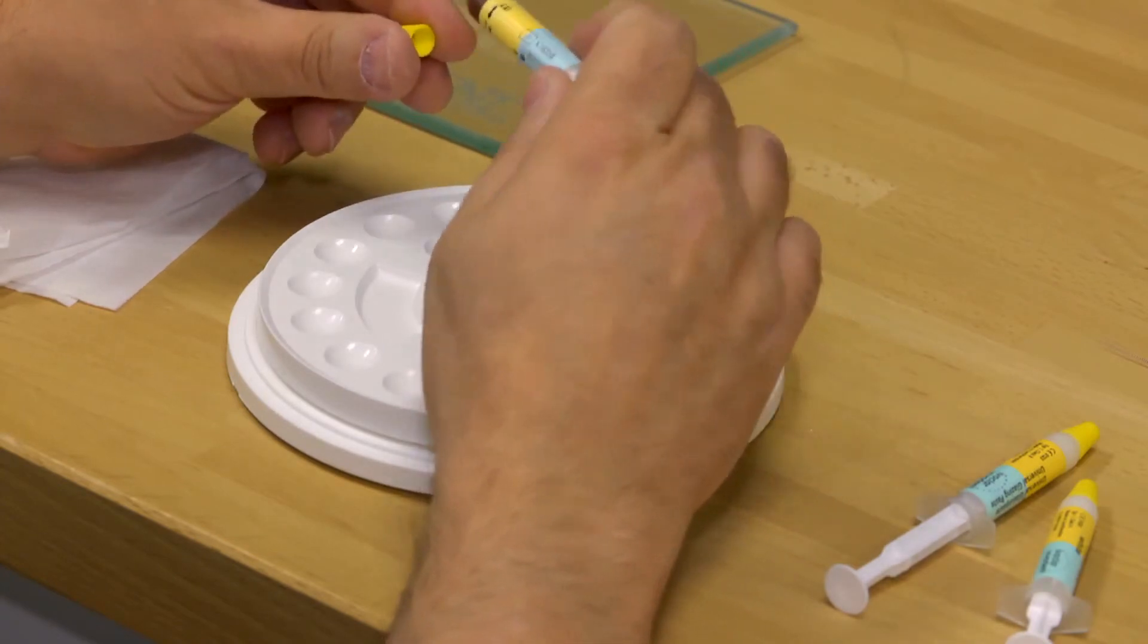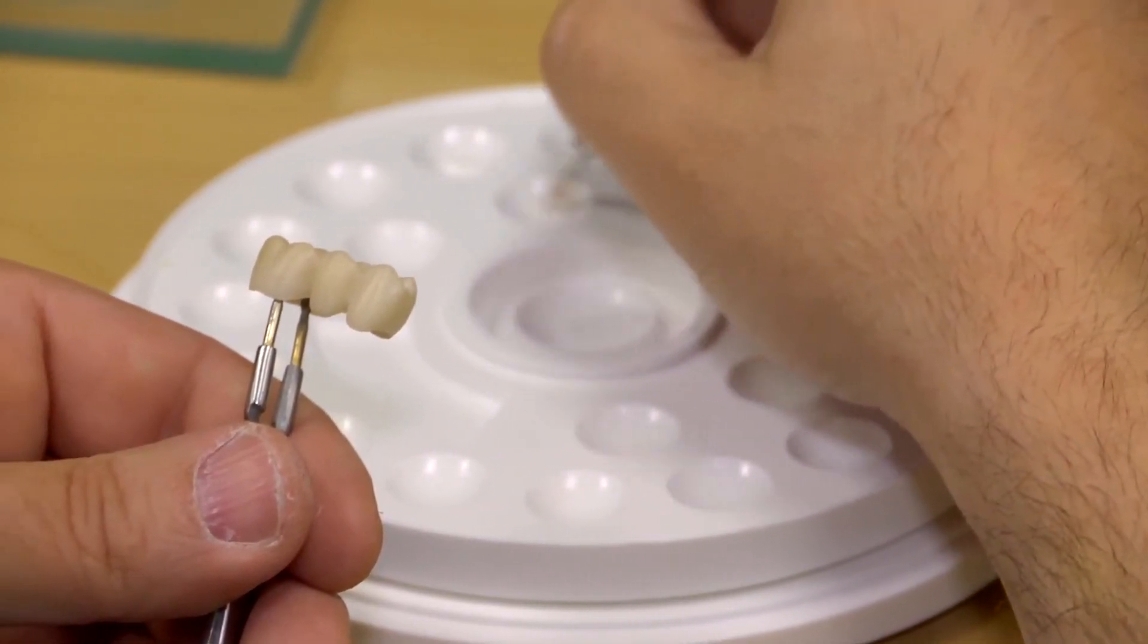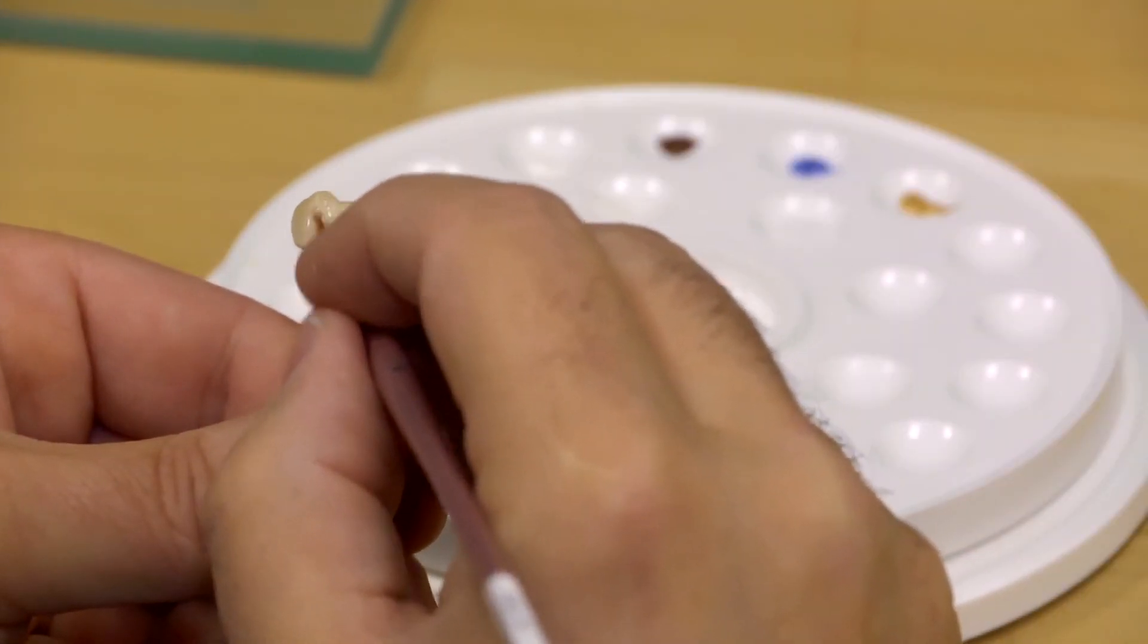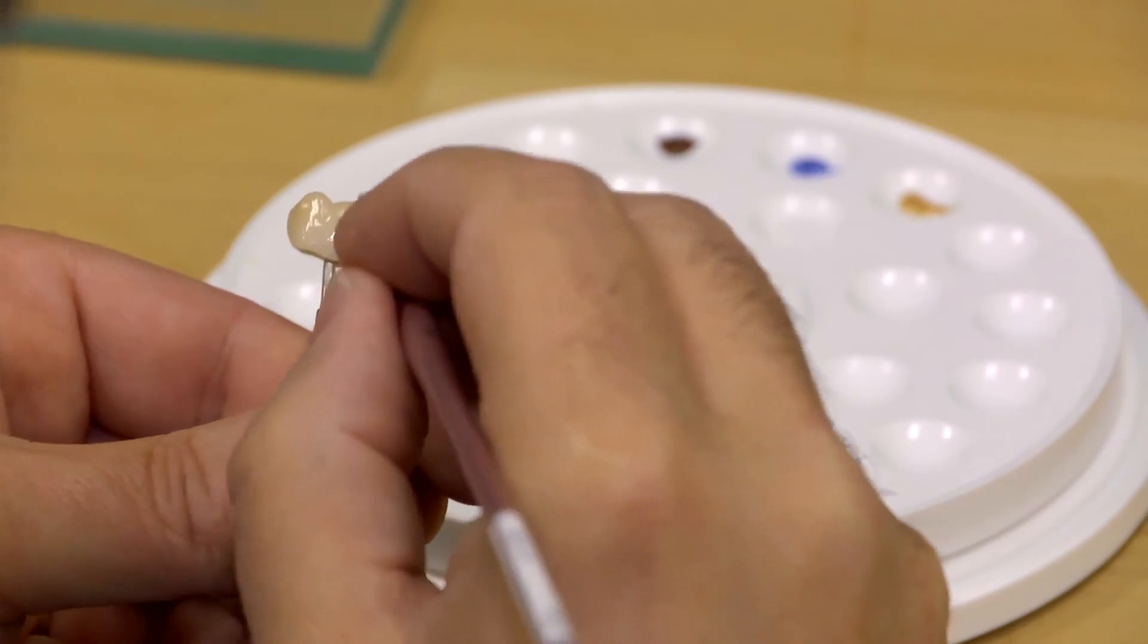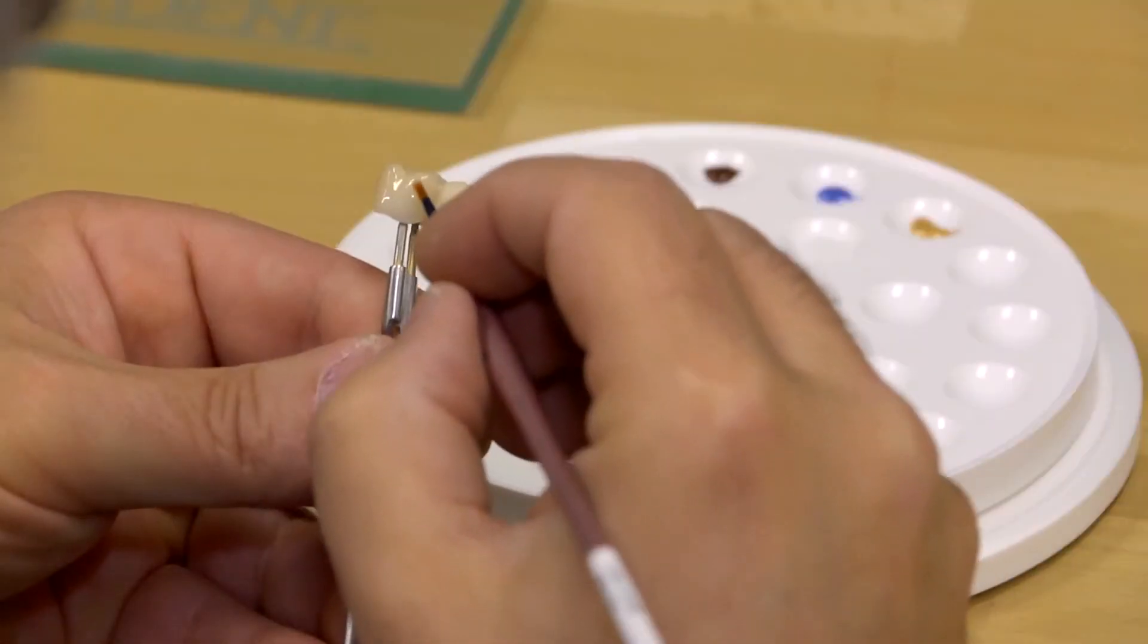However, due to the relative high opacity of the material, experience has shown us the need to shade the crown a bit darker than the listed prescription. Lighter shades sometimes only require a minor adjustment while darker shades may need to be stained a full shade darker to achieve the desired final shade.